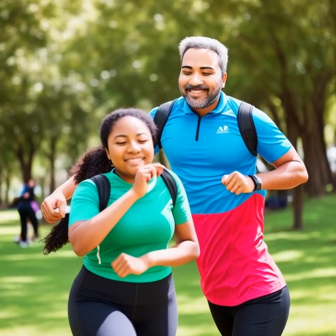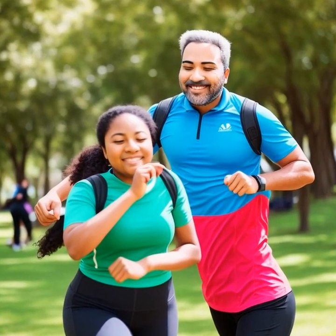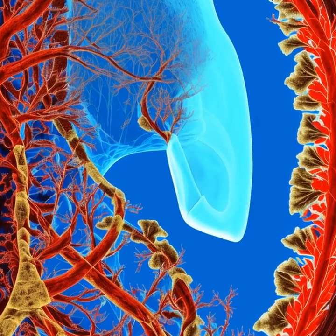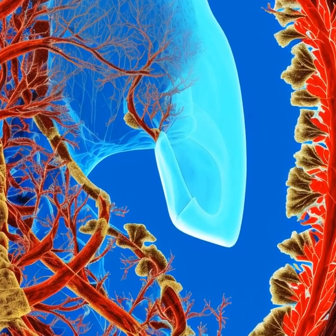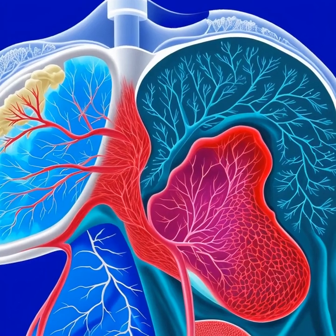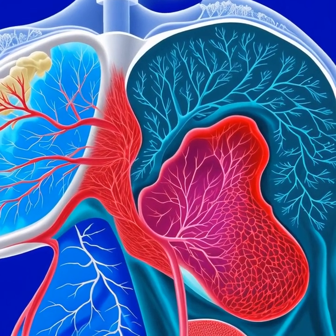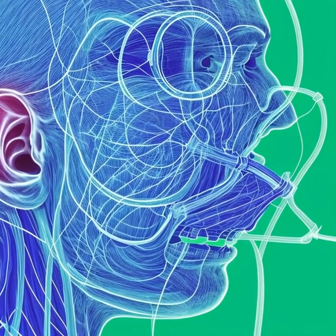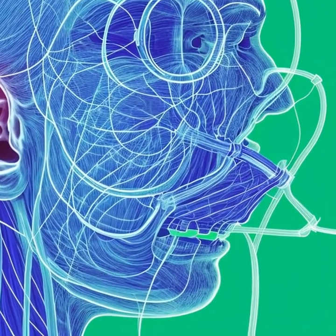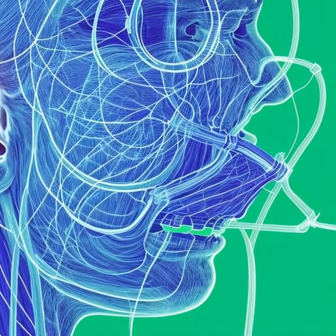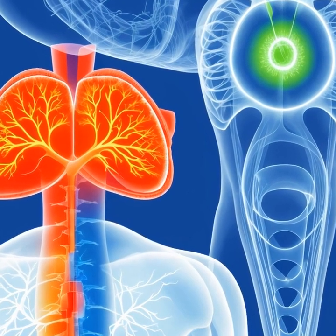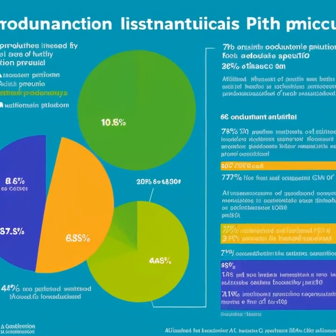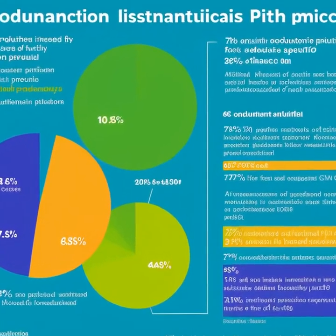Next, we will investigate the impact of asthma on lung function and overall respiratory health. Asthma can lead to structural and functional changes in the airways, which can result in limitations on airflow and oxygen exchange. With long-term inflammation, the walls of the airways can become thicker, a process known as airway remodeling. This remodeling can cause the airways to become less flexible, further limiting airflow.